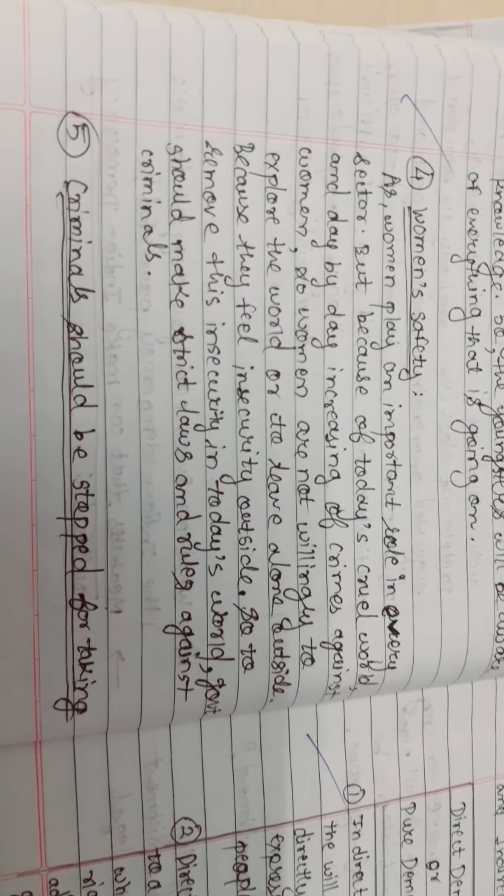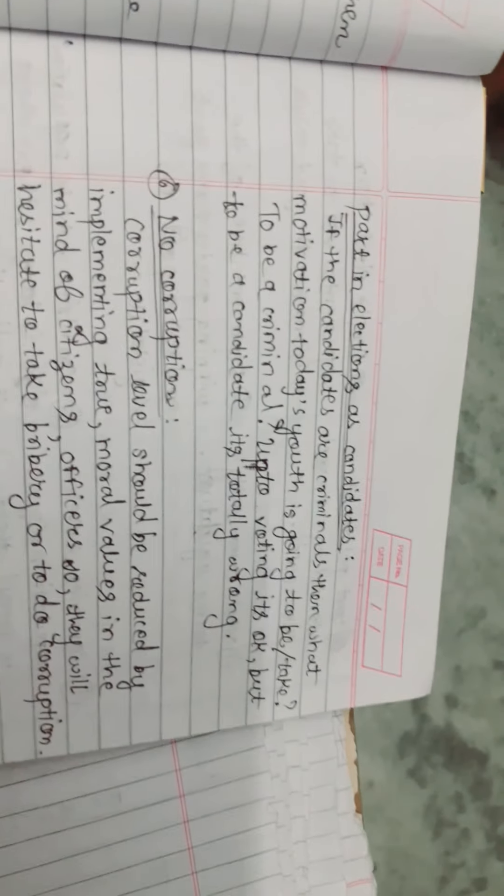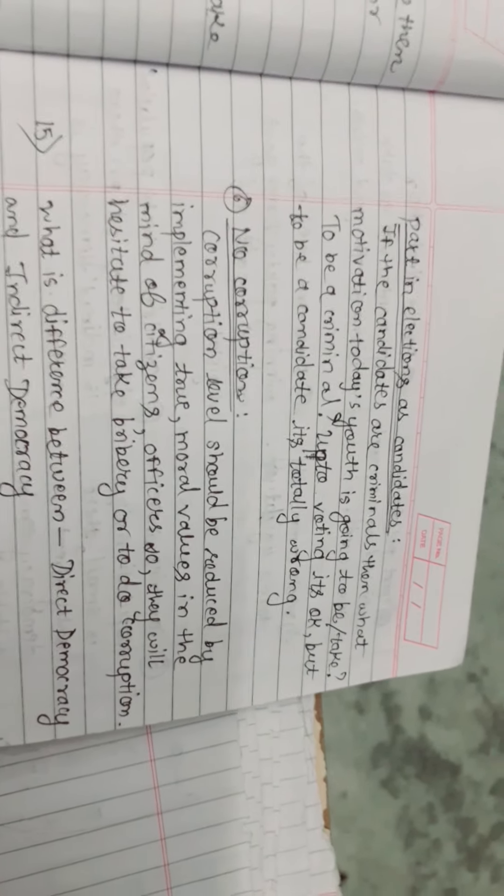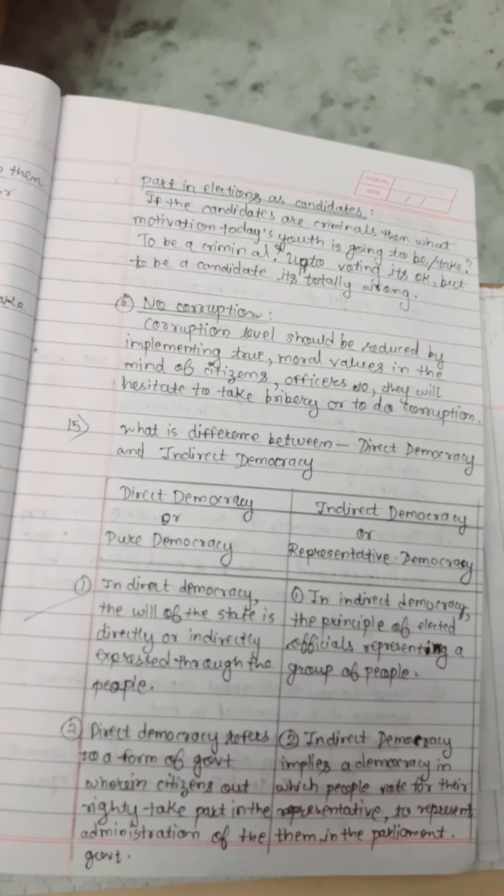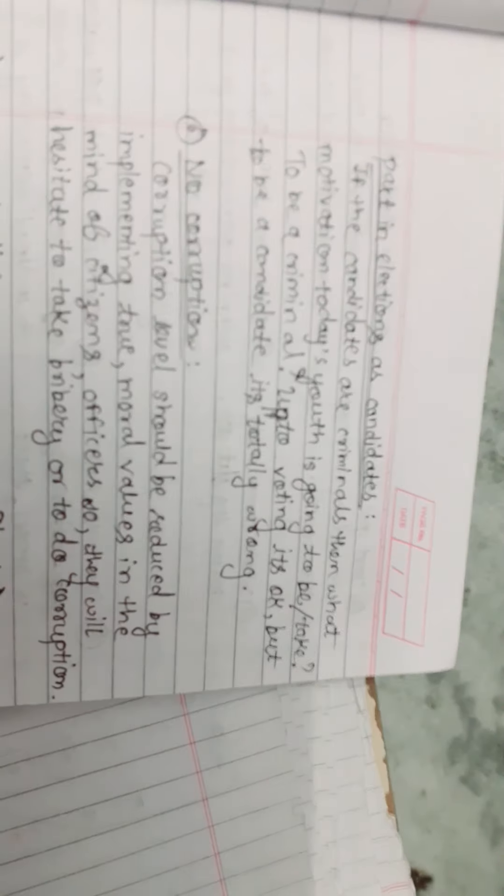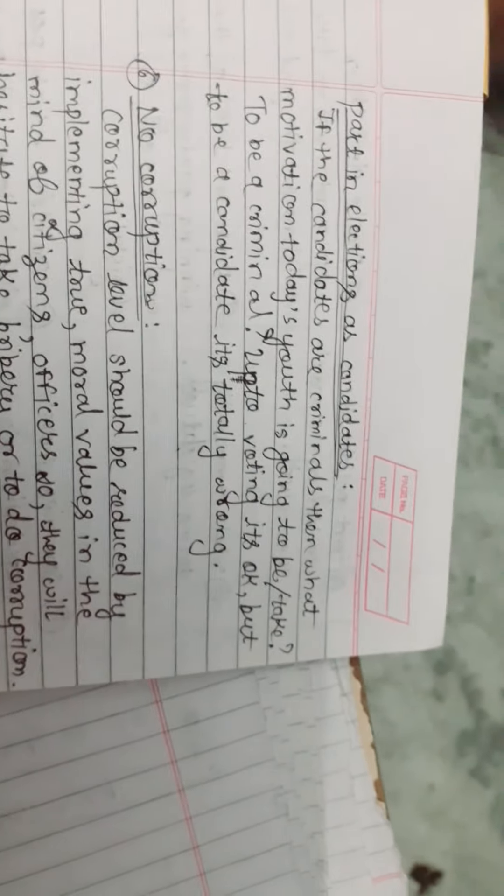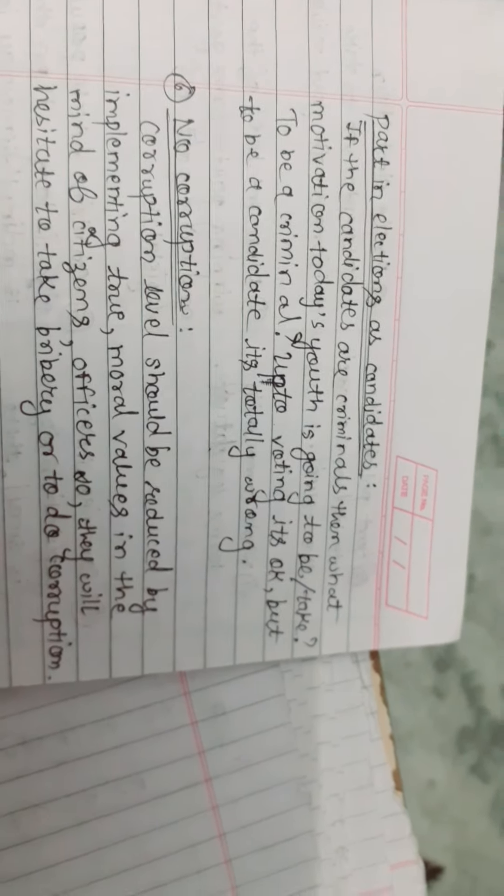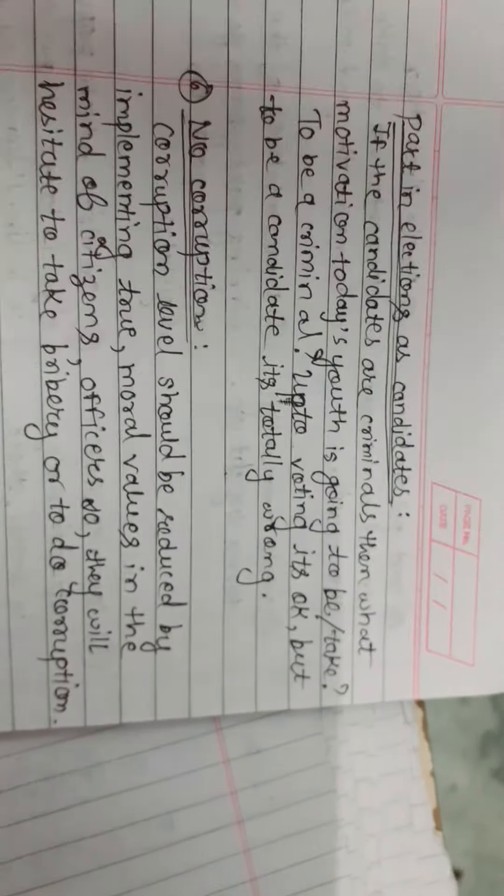Then the criminals should be stopped from taking part in the elections as candidates. If the candidates are criminals, then what motivation is today's youth going to take? To be a criminal, voting is okay, but to be a candidate, it's totally wrong.